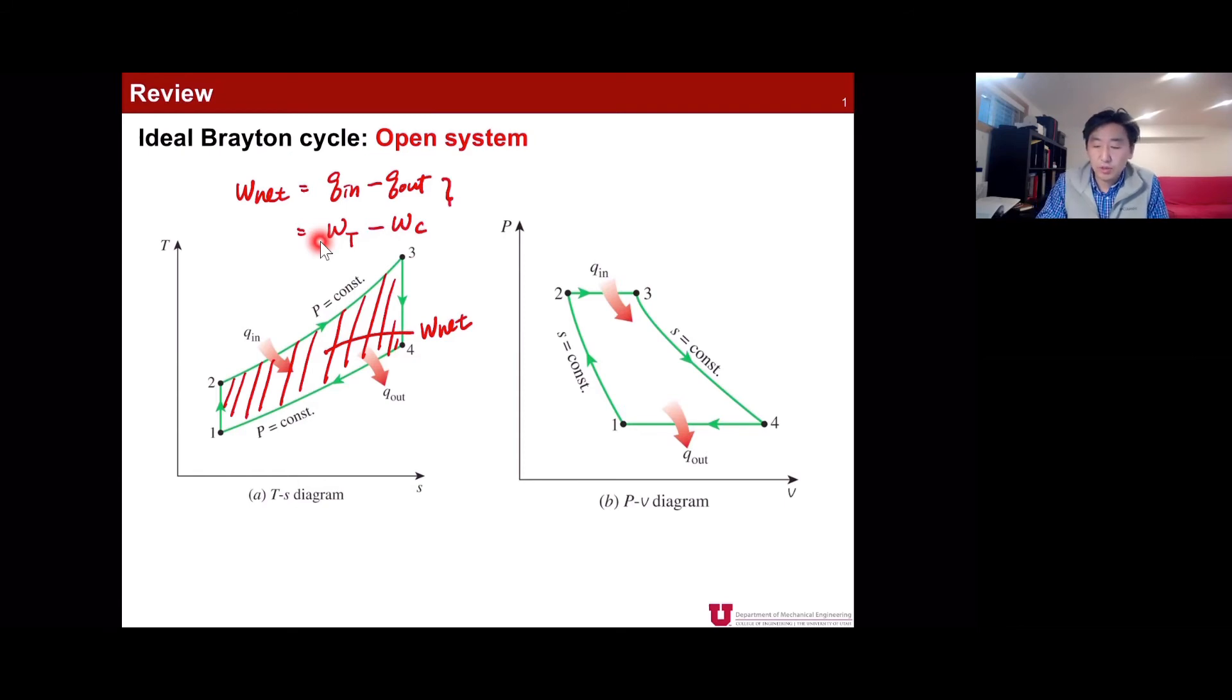Many times we use the amount of energy per unit mass, but by multiplying M dot to each term, we can also calculate the net power, which can be written as this. In this case, the unit is kW. Also, we can calculate in terms of kJ if you want.